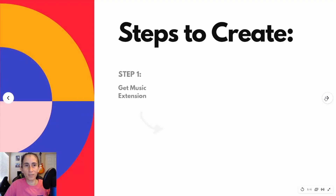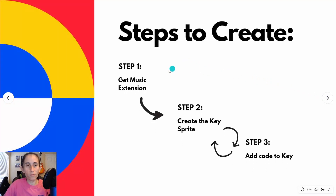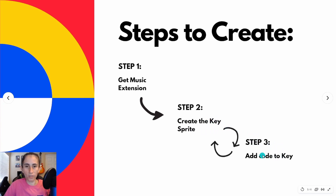Here are the steps you'll have to follow. Step number 1: we're going to add the music extension. Step number 2: we're going to create the key sprite. And then we're going to add the code to that key, and then repeat the process — I'll show you, it's going to be really quick and very simple to do.